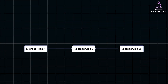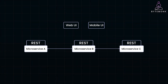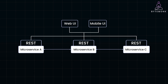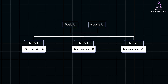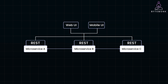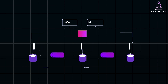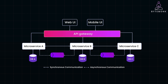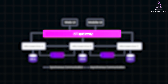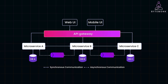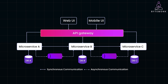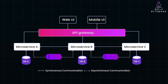In a microservices architecture, exposing your services through external APIs is essential for enabling communication between clients and your backend. However, designing these APIs comes with its own set of challenges. The API Gateway pattern is like the front door to your microservices architecture — it acts as a single entry point for all client requests, routing them to the appropriate services and often handling tasks such as authentication, rate limiting, and caching.